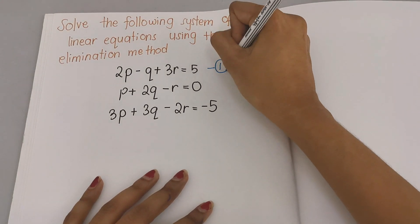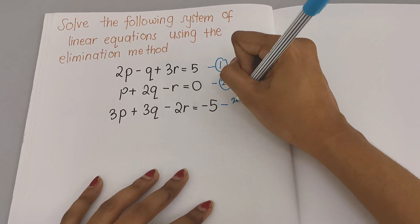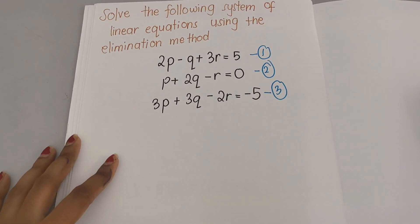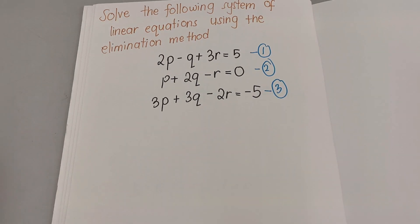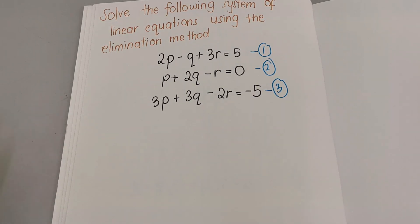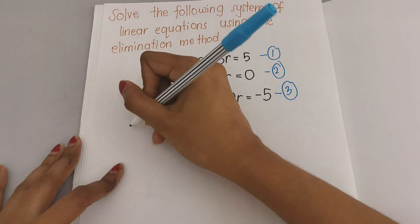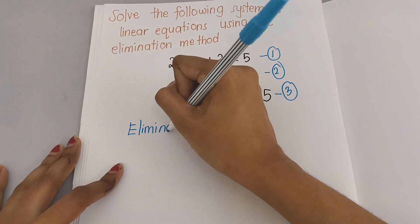First step — I will always write down equation 1, equation 2, and equation 3, so it's easy for me to track which equation I'm working with and which variable I want to eliminate. In this case I'm going to choose variable r, so I'm going to eliminate r.